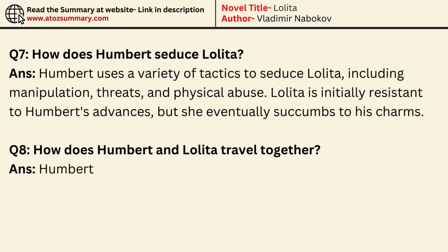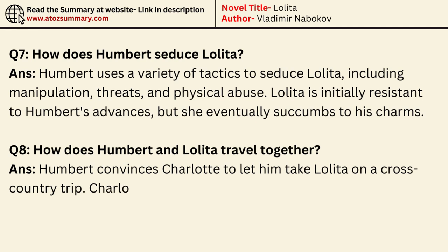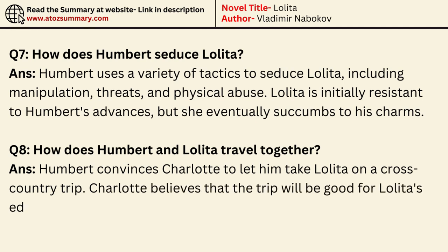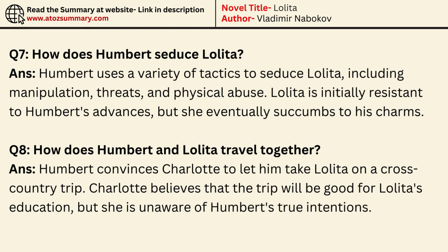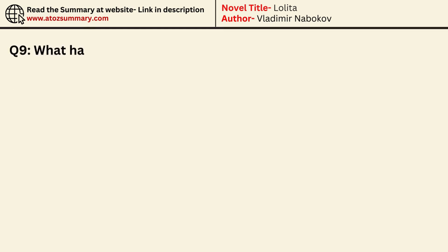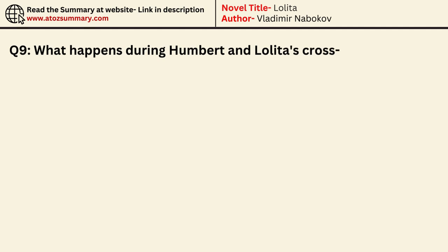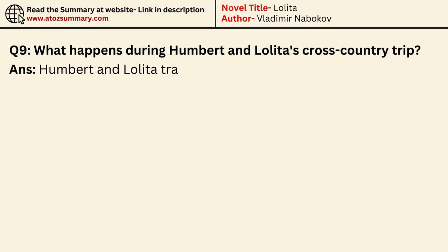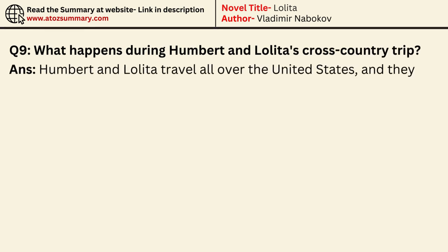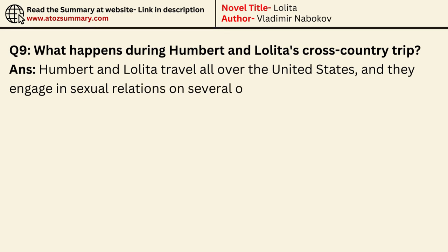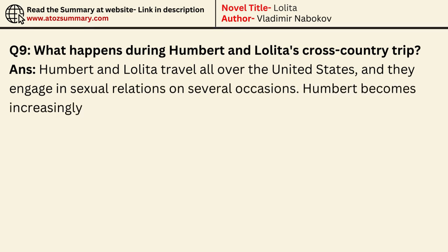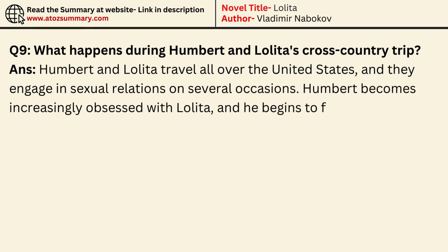How do Humbert and Lolita travel together? Humbert convinces Charlotte to let him take Lolita on a cross-country trip. Charlotte believes the trip will be good for Lolita's education, but she is unaware of Humbert's true intentions. During the trip, Humbert and Lolita travel all over the United States, and Humbert becomes increasingly obsessed with Lolita, fearing that she will leave him.